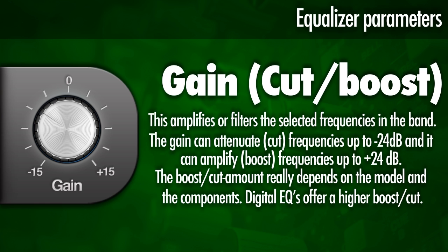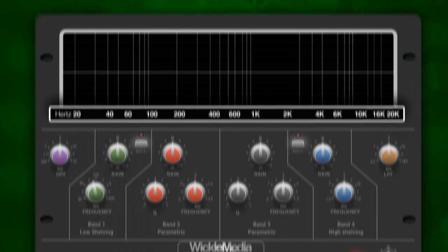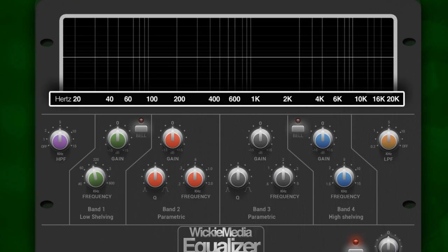Depending on the manufacturer and model, the boost/cut can go from -24dB up to +24dB. Especially with digital equalizers, the boost/cut range is a lot higher than you'll find on analog equalizers. Now let's take a look at my own constructed EQ and look at the bell shape and the shelving type equalizers.